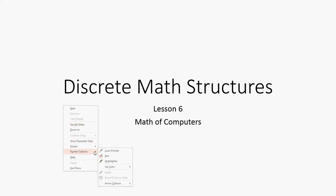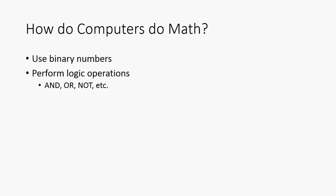Alright, welcome back to Discrete Math Structures. This is Lesson 6, and we're going to talk about the math of computers. This is typically not covered too thoroughly in discrete math classes, but some cover it, so I'm just going to talk about it briefly. So how do computers do math? They use binary numbers and they perform logical operations, typically the ones we've seen before, with AND, OR, and NOT.